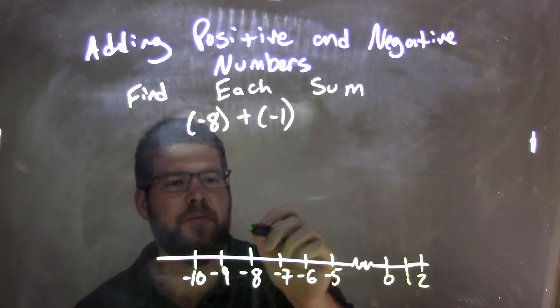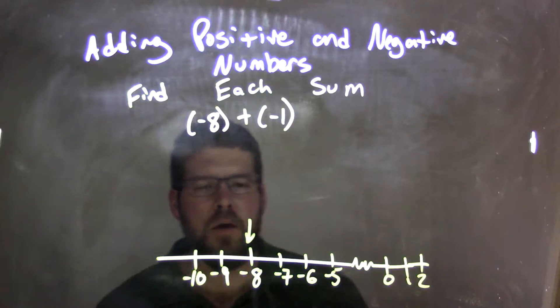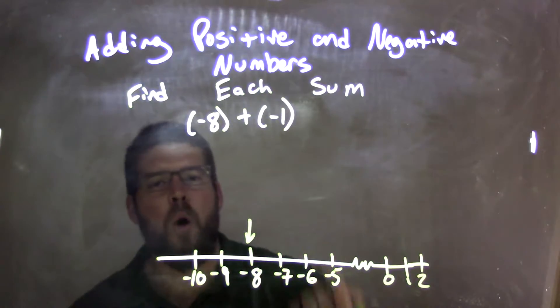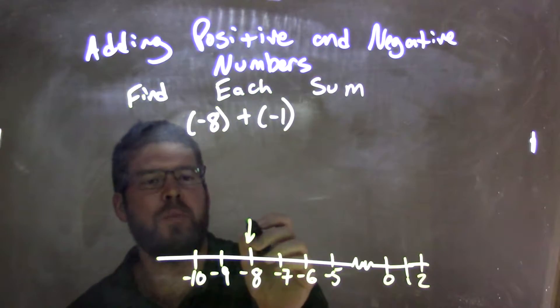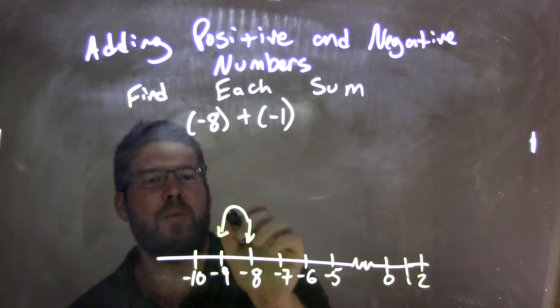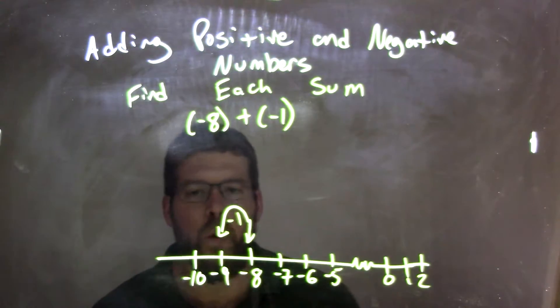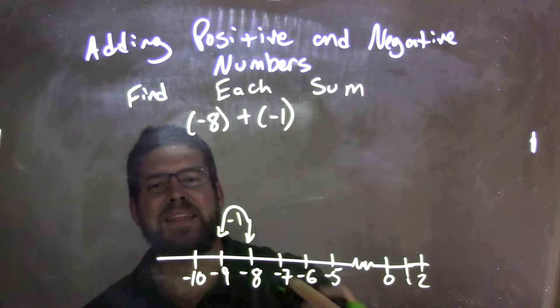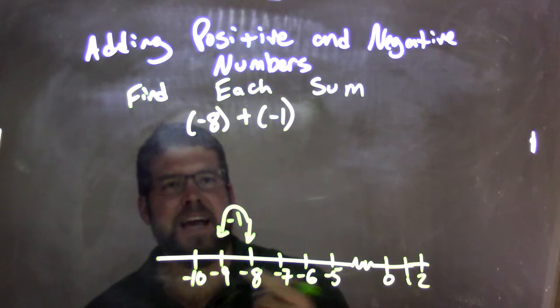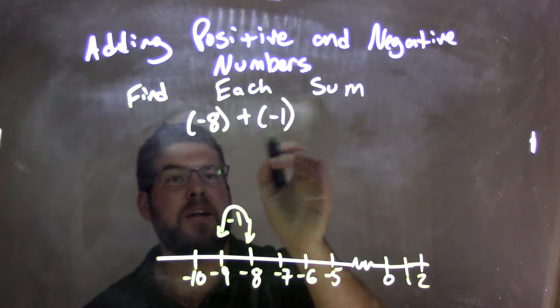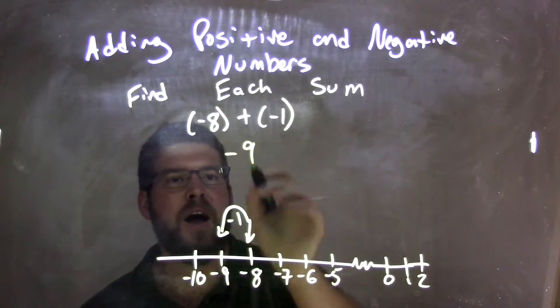We're starting with negative 8 right there. So with negative 8, we want to add one more negative 1 to it, so we're going to move to the left one position, one unit. So negative 8 plus negative 1 is negative 9.